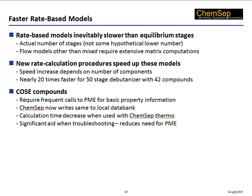One of the long-standing complaints about rate-based simulation is that it is significantly slower than an equivalent equilibrium stage calculation. To some extent this is more or less inevitable, since the models are significantly more complicated, with many more equations, many more physical properties, and more complicated equations at that. In particular, flow models other than mixed require extensive matrix computations. Recently, we were able to speed up these flow model calculations so that now all flow models take more or less the same amount of time. In one particular application of significance to a ChemSat user, we were able to speed up the calculations by a factor of 18.